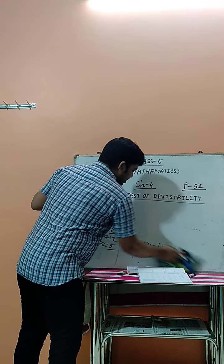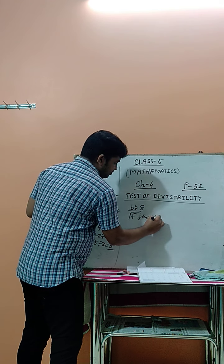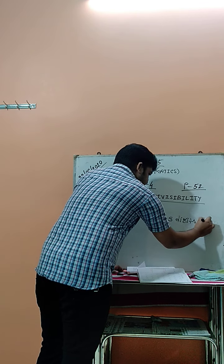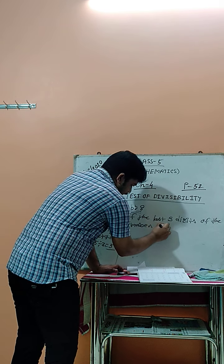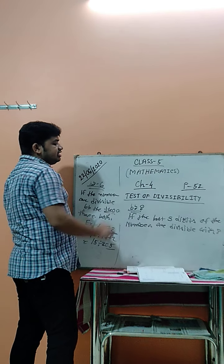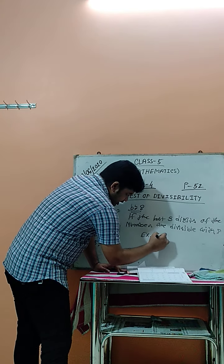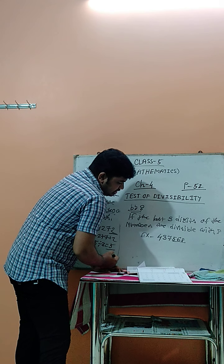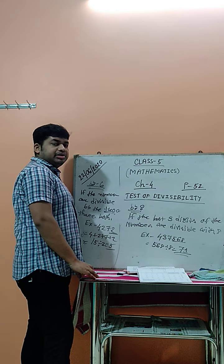For divisibility by 8: if the last three digits of a number are divisible by 8, then the whole number is divisible by 8. For example, take 437568. The last three digits are 568. Since 568 divided by 8 equals 71, this number is divisible by 8.